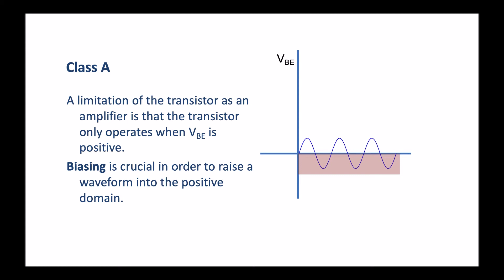The solution to this is something called biasing. Biasing is crucial in order to raise a waveform into the positive domain. What we do is cheat essentially and say, well, if the negative half cycle is not allowed by the transistor, then we'll move the whole waveform up so that it's always in the positive domain. This means that the whole waveform is now amplified.